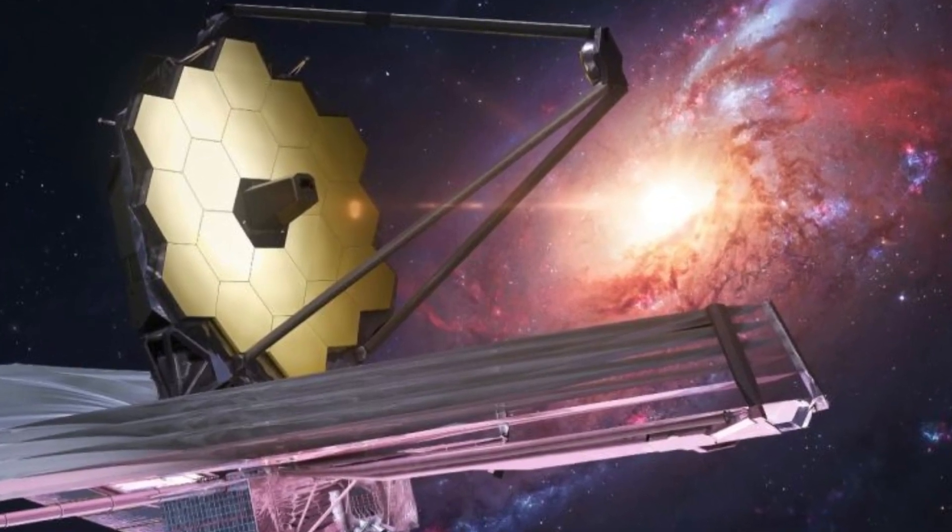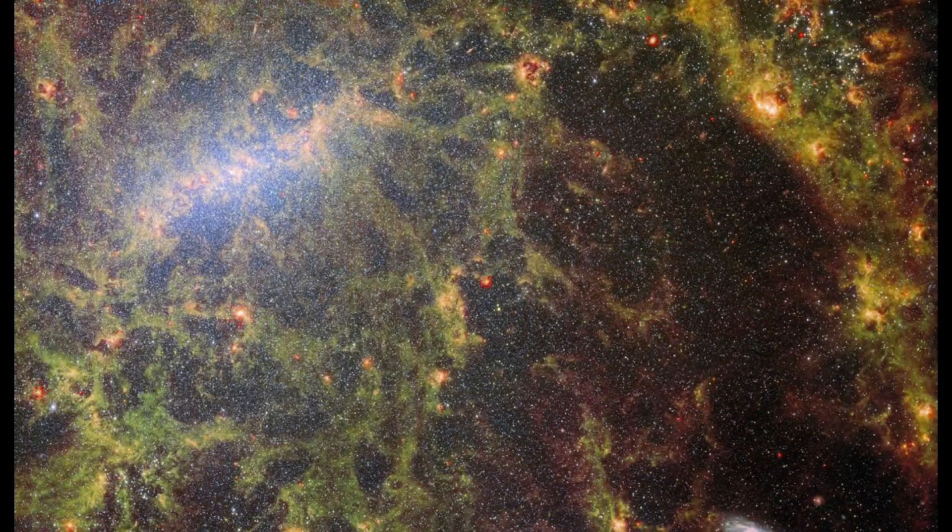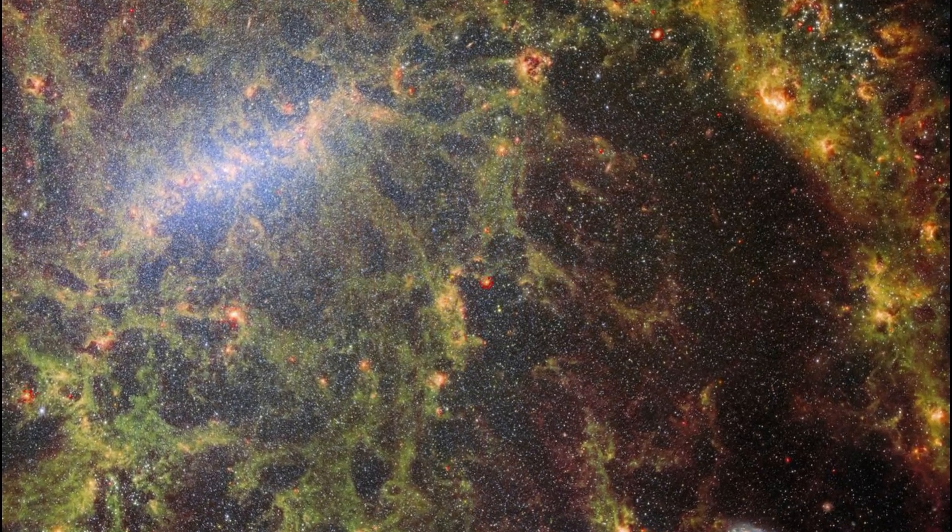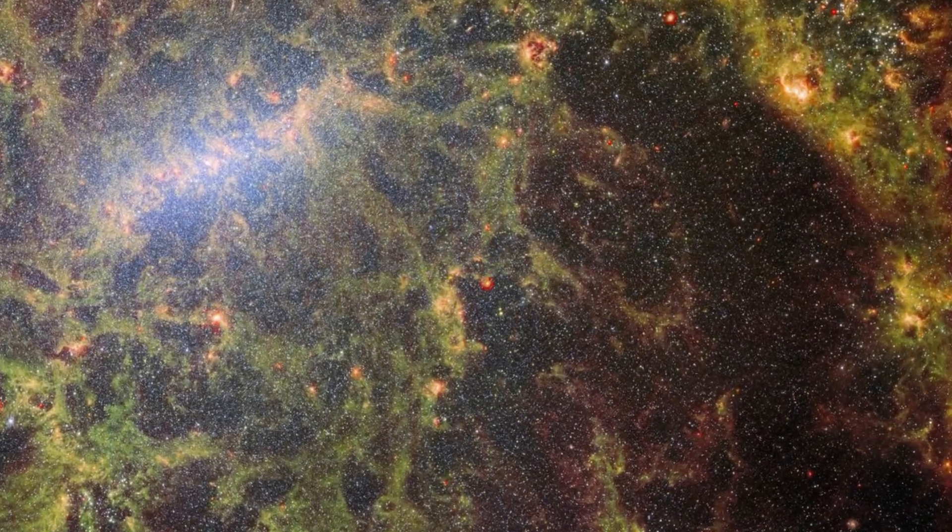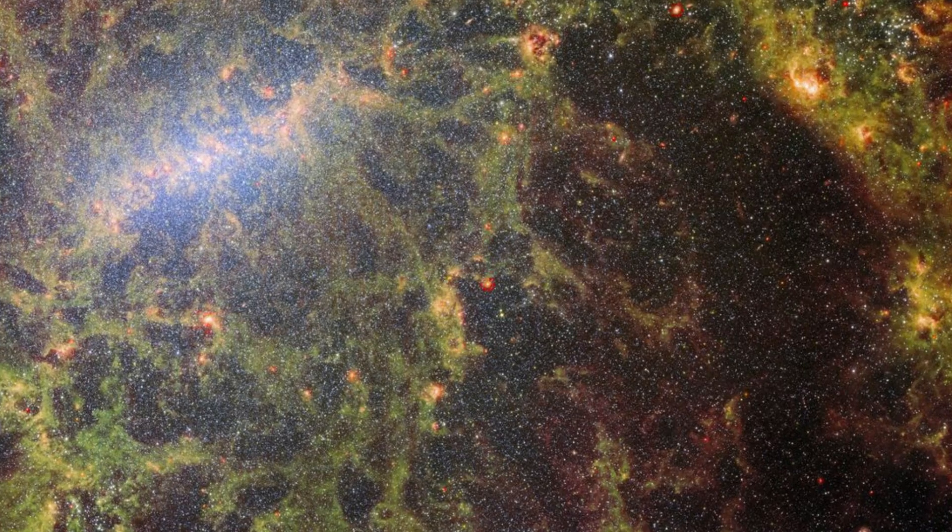The barred spiral galaxy NGC 5068 is depicted with tendrils of gas and stars encircling it. The upper left-hand corner of the image shows the galaxy's bright and thick central bar, which distinguishes it from spiral galaxies that aren't barred.